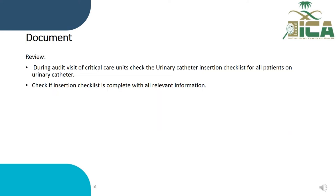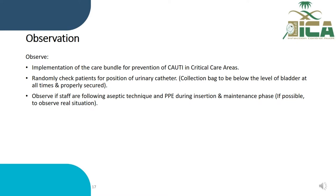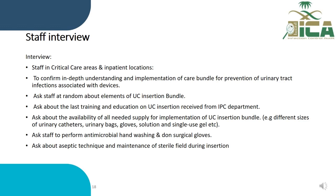During audit rounds, ask for patients on urinary catheter and check their files for all relevant data. During observation, observe that the care bundle is implemented properly. Check for the position of the urinary catheter and that it is properly secured. Observe if staff are following aseptic techniques and PPE during insertion and maintenance. In staff interviews, assess the understanding of healthcare workers about the urinary catheter bundle. Ask about elements of insertion and maintenance, when they last received training, availability of supplies, and ask staff to perform antimicrobial hand washing and don surgical gloves.